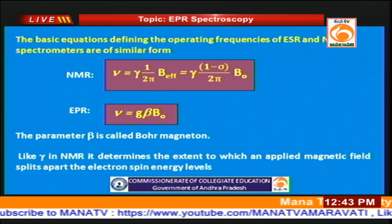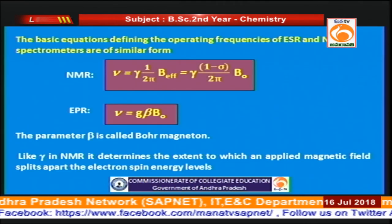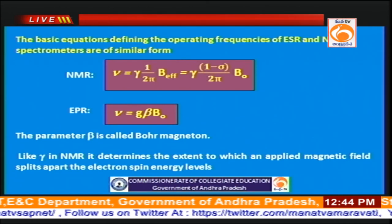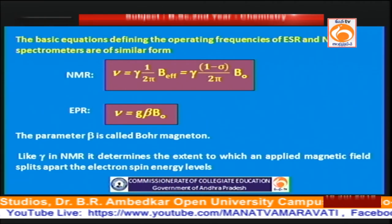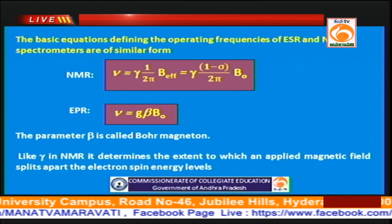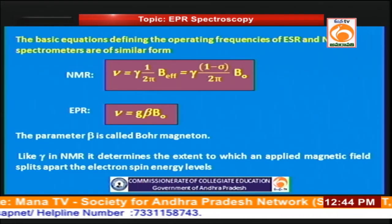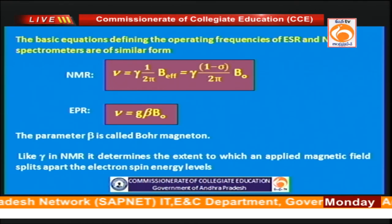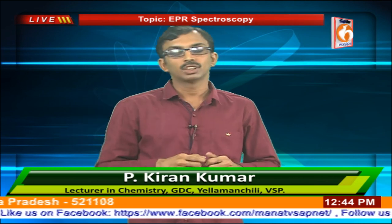Let us compare the basic equations of NMR and EPR. In NMR, the operating frequency ν depends on B₀, where σ indicates the shielding constant because electrons surround the proton in a molecule. In EPR, the operating frequency is given by g × β × B₀, where β is an important parameter known as the Bohr magneton — analogous to γ in NMR. Like γ in NMR, it determines the extent to which the two spin states of the electron undergo splitting. In NMR the two spin states for the proton are indicated by +1/2 and −1/2, whereas in EPR, like the proton, the electron has two spin states: the lower energy state is +1/2 and the higher energy state is −1/2.